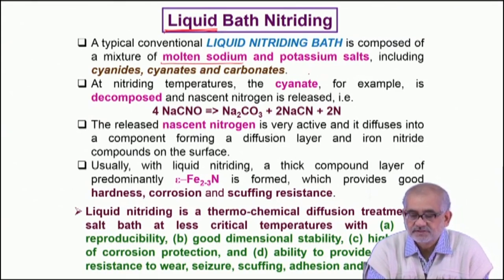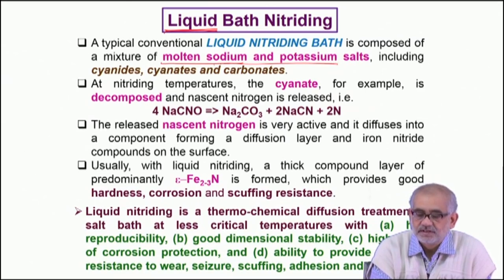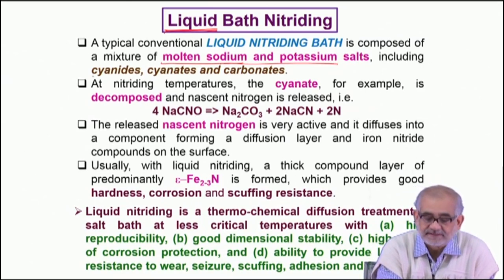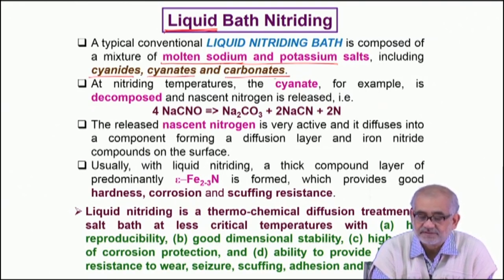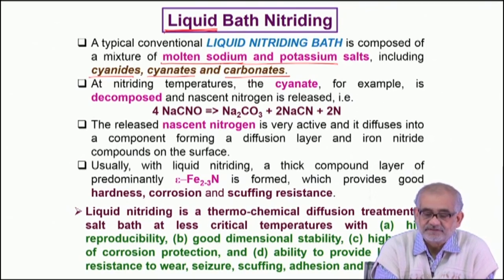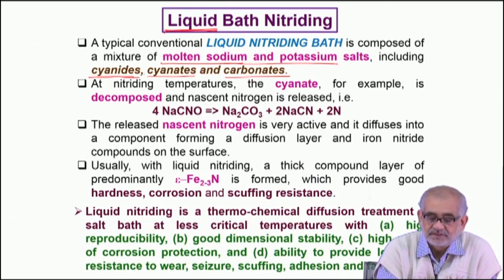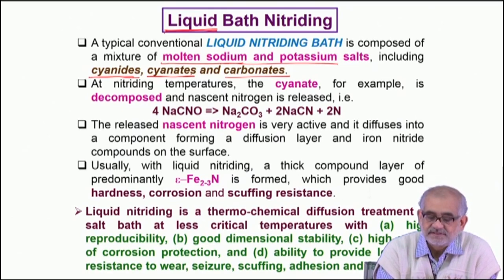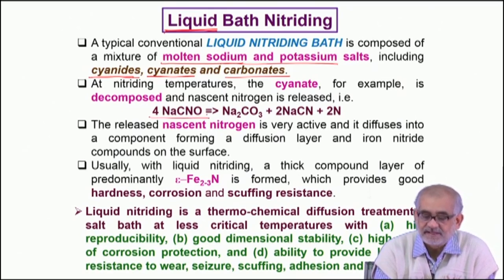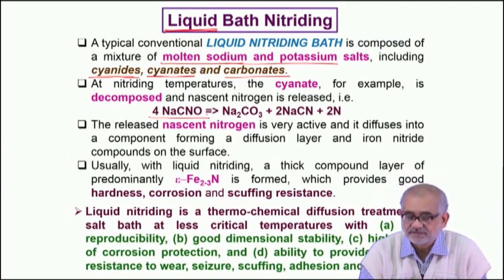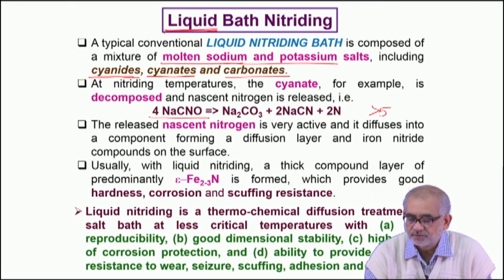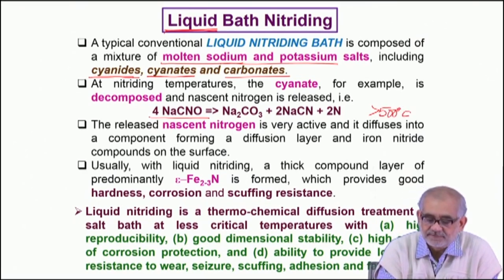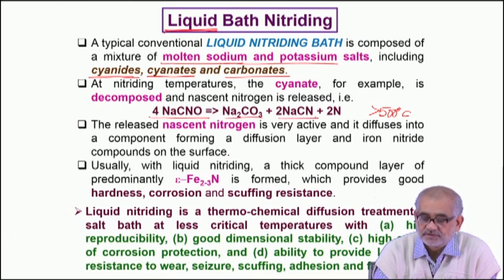We deal with molten sodium and potassium salts — usually cyanides, and in some cases cyanides and carbonates. Carbonate acts more like an activator, but cyanide is the main source of nitrogen. In many cases we do not deal with cyanide directly because it is highly toxic. We deal with, for example, sodium cyanide at the temperature where we do the nitriding process — typically around 500 degrees centigrade — where the cyanide decomposes into sodium carbonate and, most importantly, sodium cyanate.